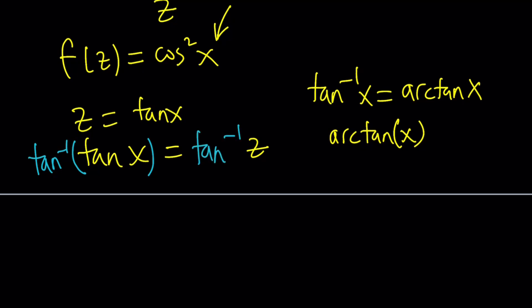Now, at this point, tan inverse and tan are going to cancel out. We're going to end up with x equals tan inverse of z.